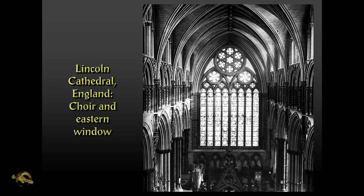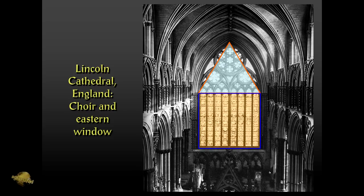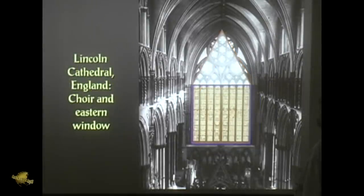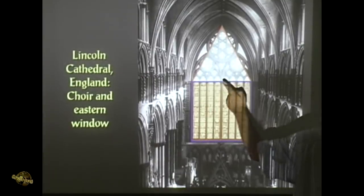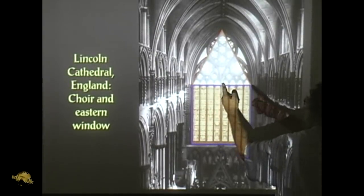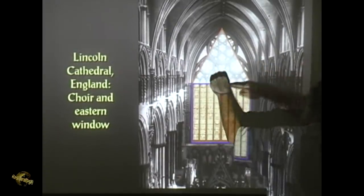Lincoln Cathedral, England — the choir in the eastern window. In this particular elevation we find ad quadratum and ad triangulum integrated, which was allowable. There is the equilateral triangle and there is the square. The square manifests the root two geometries and mathematical relationships, while the equilateral triangle represents or manifests the root three geometry. In the equilateral triangle all three sides are equal, and if we split it down the middle, we discover that this to that is one to the square root of three.